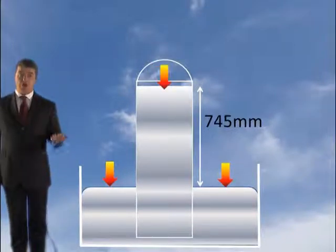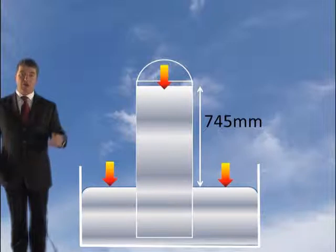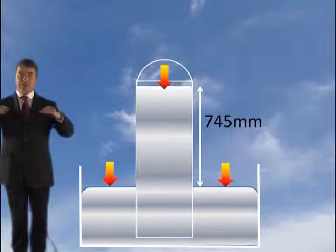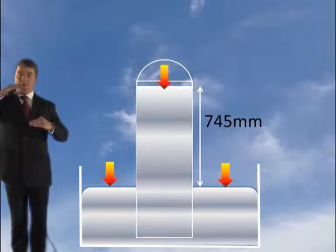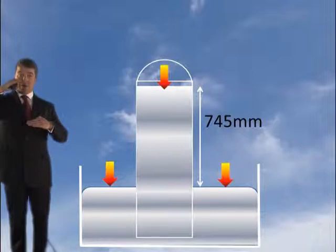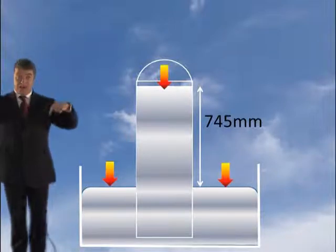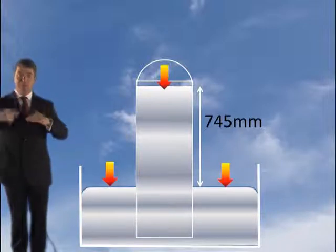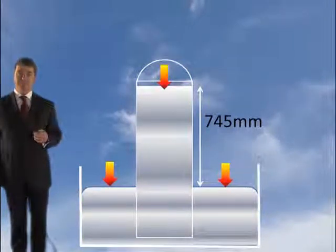If the pressure dropped outside, the level in the mercury barometer would also drop — it's held in there by atmospheric pressure. If the pressure outside drops, the mercury drops. That's how you use a mercury barometer: the pressure drops outside, the mercury level drops accordingly.